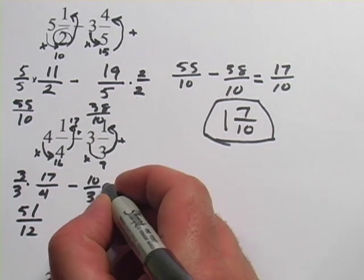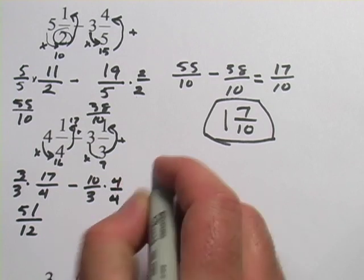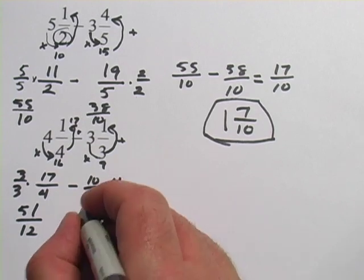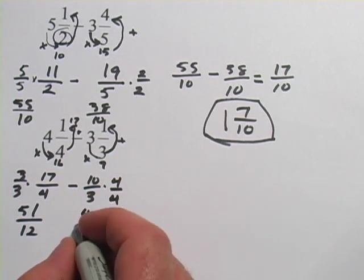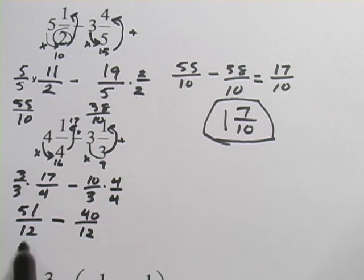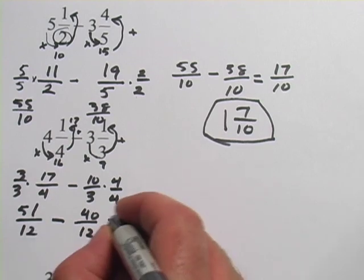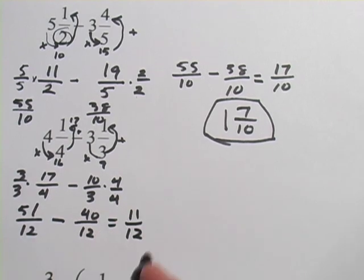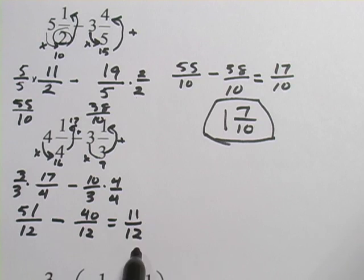And then over here I have to multiply by 4 over 4. 10 times 4 is 40. And 3 times 4 is 12. Now I can do my subtraction. I have 51 twelfths minus 40 twelfths. So 51 minus 40 is 11 twelfths. And I should be done there because this is not an improper fraction. The numerator is smaller than the denominator.